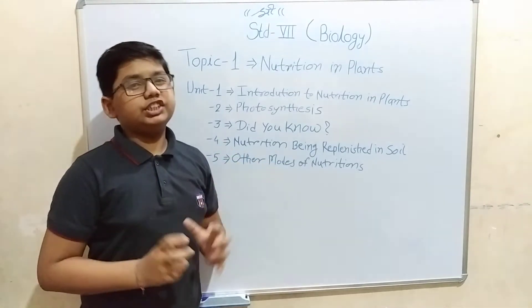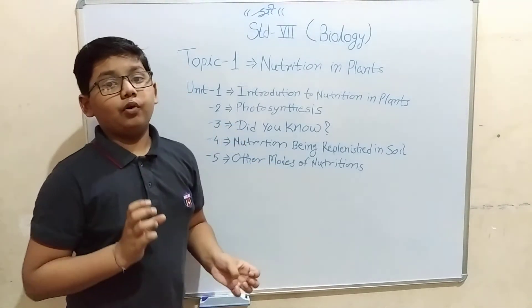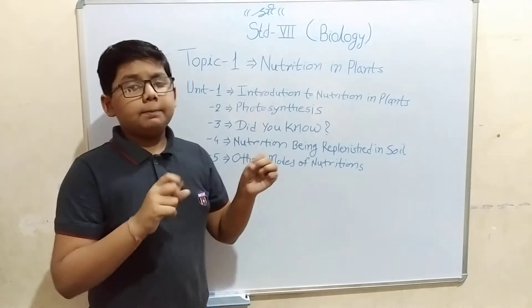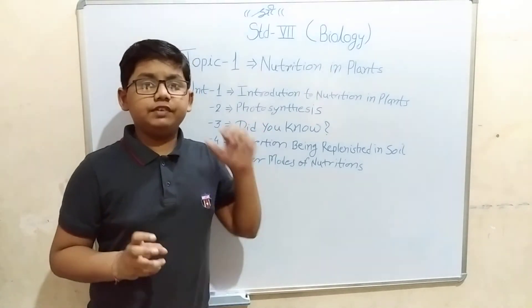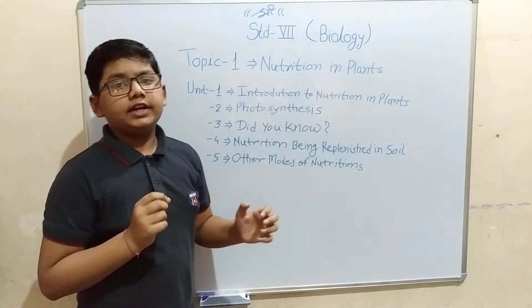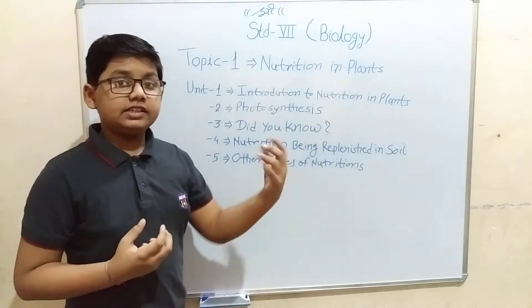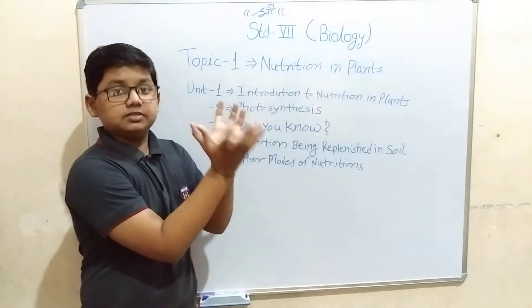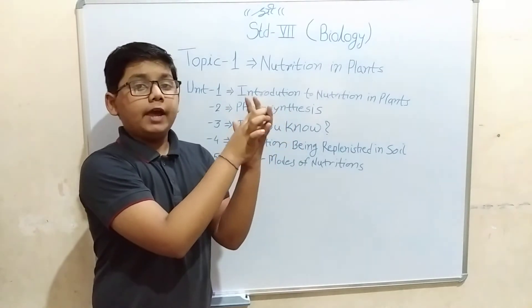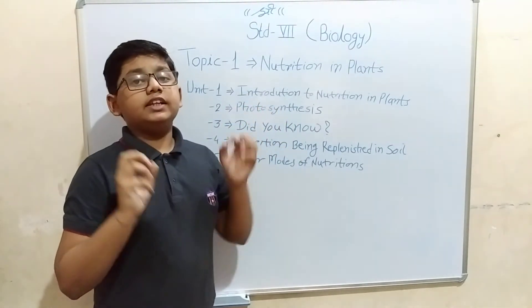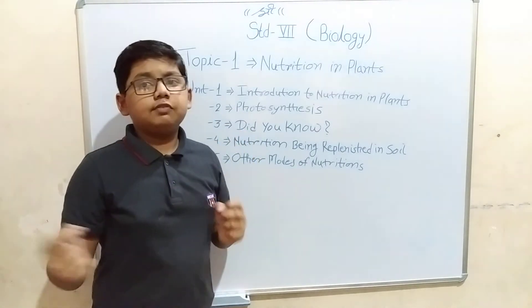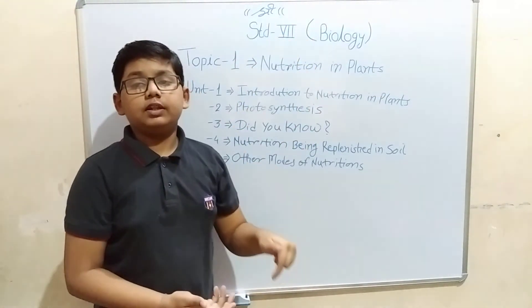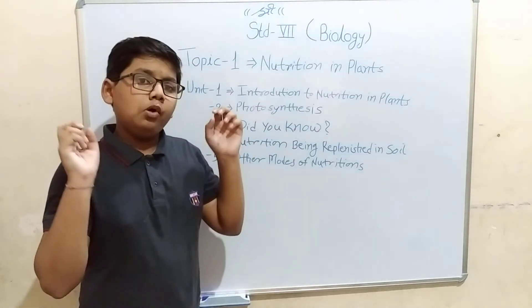There are also non-vegetarian plants called insectivorous plants. The best examples are the Venus flytrap and the pitcher plant. The Venus flytrap has wing-like structures, and when an insect sits on its wings, it traps the insect and digestive juices act on it until it is digested. The pitcher plant has a pitcher-like structure — when an insect slips into the pitcher, the plant takes in nutrition from it.